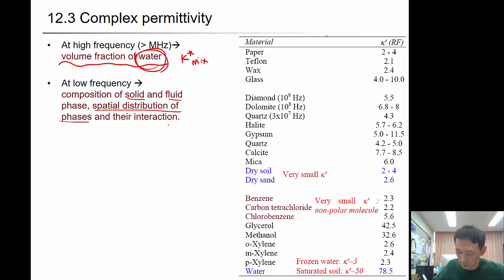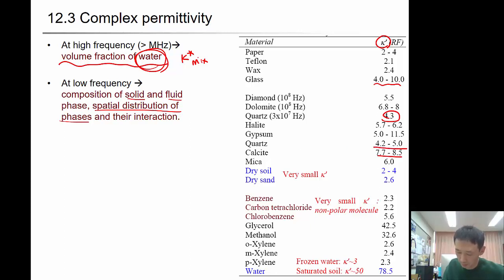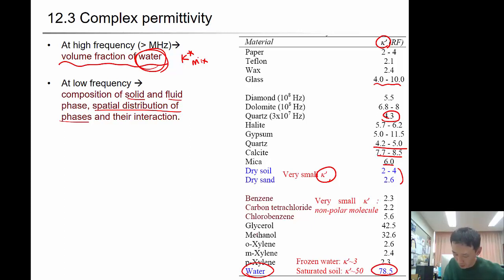Looking at the kappa prime values at radio frequency around megahertz: paper, teflon, wax, and glass is around 4 to 10. Diamond and quartz is around 4. Quartz is 4 to 5, calcite is around 8, mica is 6. Dry soil and dry sand is 2 to 4 — very small kappa prime. Water is around 80, and methanol is around 32.